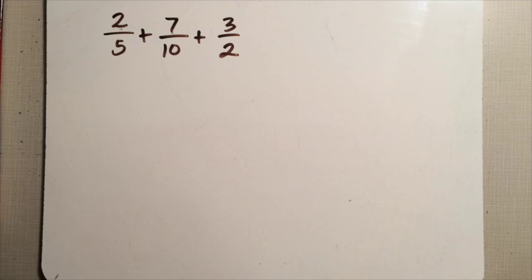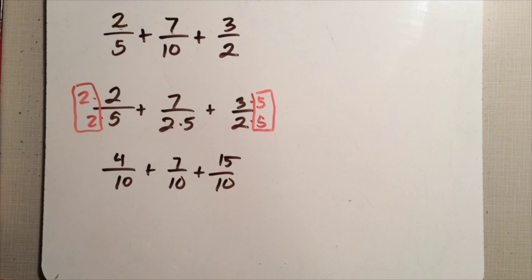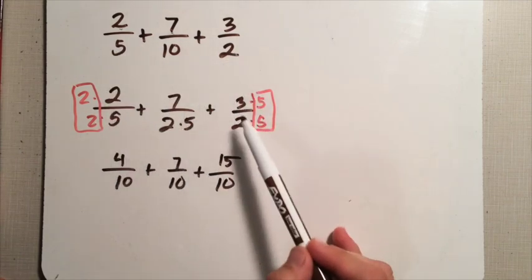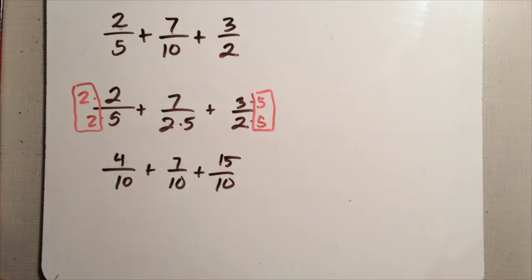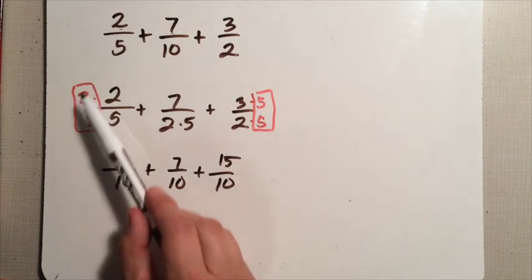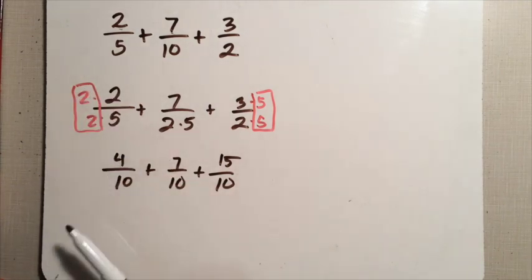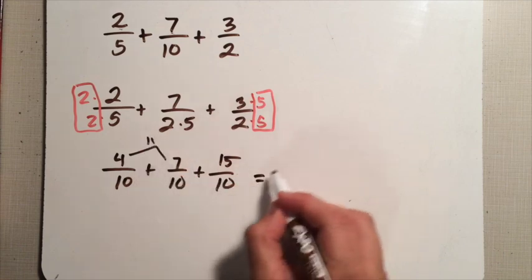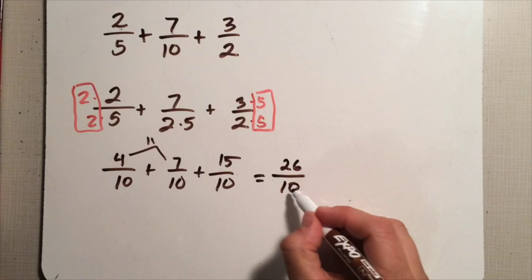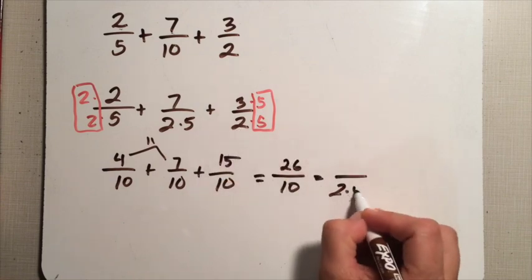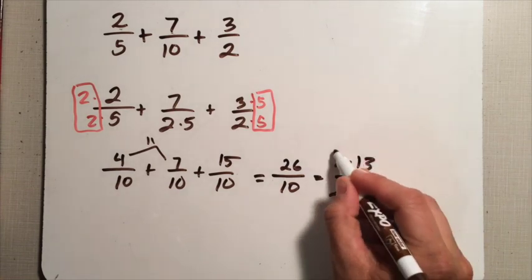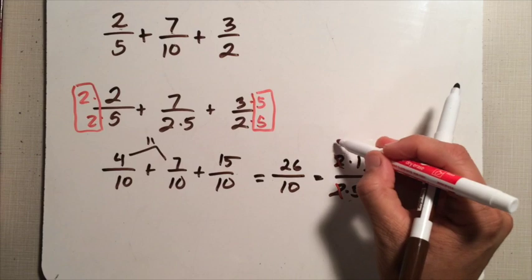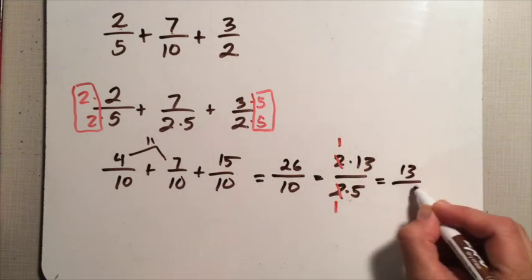Give this one a try — you can probably do it without the primes, but practice with the primes. The next one's going to be harder. Two is prime, ten is two times five. Every denominator needs to be two times five, so multiply the first fraction by five and the third by two, numerator and denominator. My new fractions are four tenths, seven tenths, fifteen tenths. Seven plus four is eleven, eleven plus fifteen is twenty-six tenths. My denominator is two times five, and I can clearly see there's a two in twenty-six: twenty-six is two times thirteen. So my answer is thirteen over five.